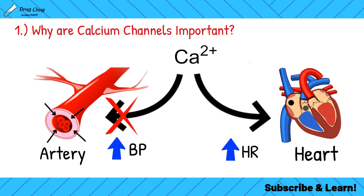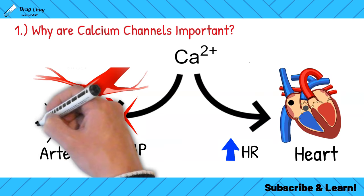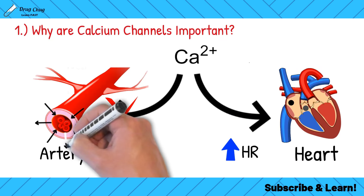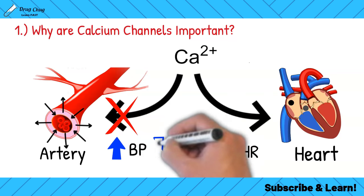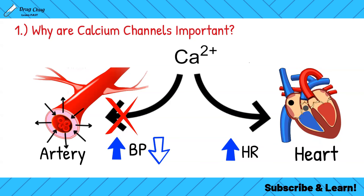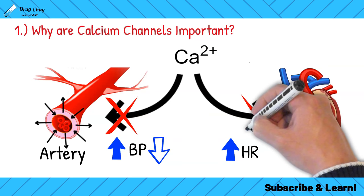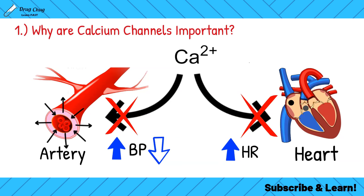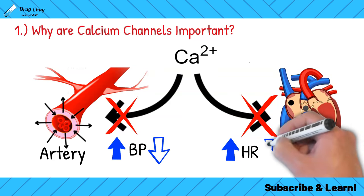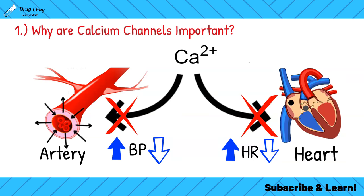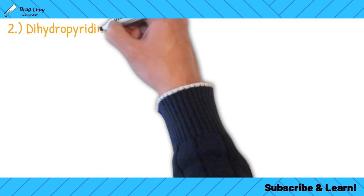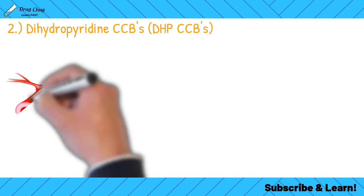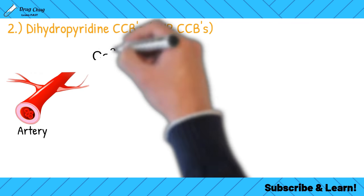If we block calcium channels in the body, we can affect the arteries — preventing calcium from causing vasoconstriction, leading to vasodilation and decreased blood pressure. Or we can block calcium channels on the heart, stopping calcium influx and slowing down heart rate. There are only two types of calcium channel blockers: dihydropyridine (DHP) and non-dihydropyridine.